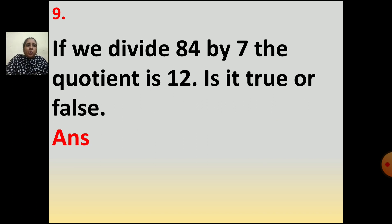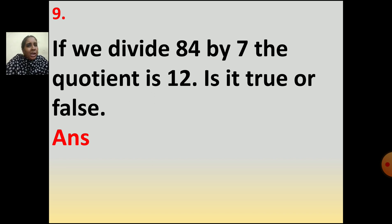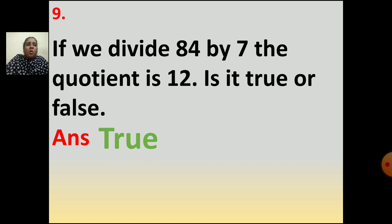Now the ninth question: If we divide 84 by 7, the quotient is 12 — is it true or false? In the table of 7, when you get 84 — 7 twelves are 84. So is it true or false? Your answer is true.